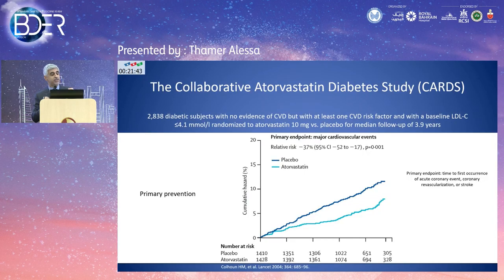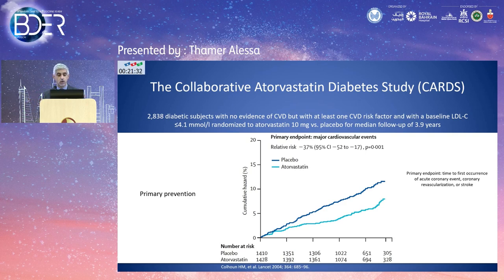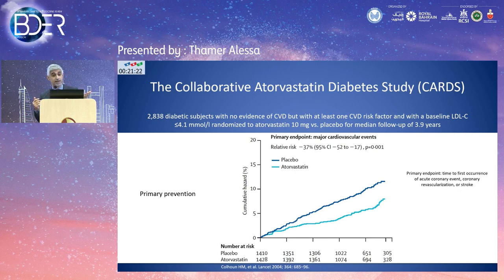The CARDS trial was the first trial dedicated to diabetic patients looking for event reduction with statins — a primary prevention trial of 2,800 diabetic patients with no cardiovascular disease but at least one additional risk factor. Their LDL was less than 4.1. They received either atorvastatin 10 mg or placebo and were followed for about four years. There was a 37% reduction in the primary endpoint of major cardiovascular events.